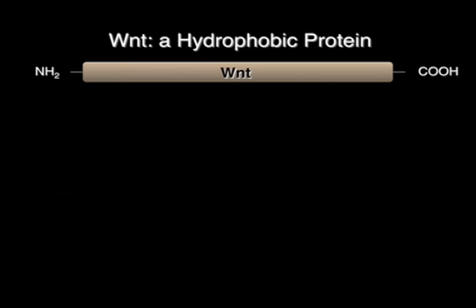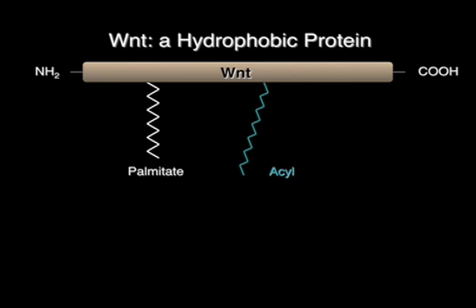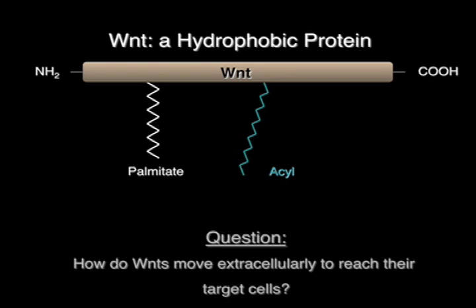A primary problem is that Wnt molecules, despite being predicted to be hydrophilic based on their primary amino acid sequence, are modified post-translationally by lipid moieties such as palmitoyl groups, which make them highly hydrophobic and not easily diffusible in the extracellular space. This raises the question of how Wnts are transported across cells to form a gradient in the embryo, or to cross to the postsynaptic site at synapses where the Wnt receptors are localized.